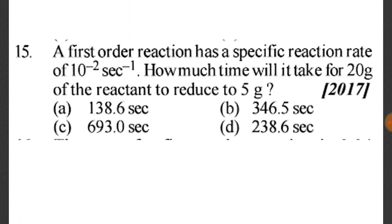Question 15: A first order reaction has a specific reaction rate of 10⁻² per second. How much time will it take for 20 grams of the reactant to reduce to 5 grams? We will solve this for a first order reaction using: k = 2.303/t · log(a₀/aₜ).